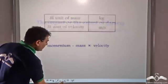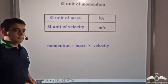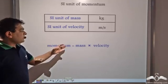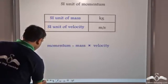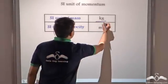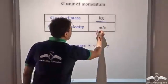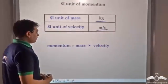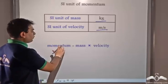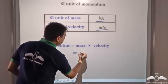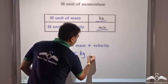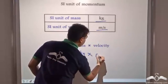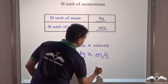So now what is the SI unit of momentum? Since momentum is equal to mass into velocity and the SI unit of mass is kg, and the SI unit of velocity is meters per second, so the SI unit of momentum is equal to, instead of mass let's write kg, into instead of velocity we write meters per second.